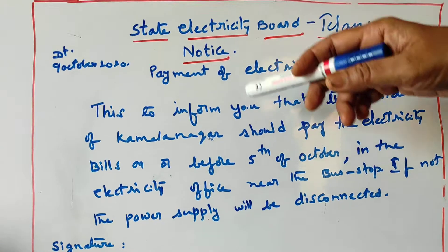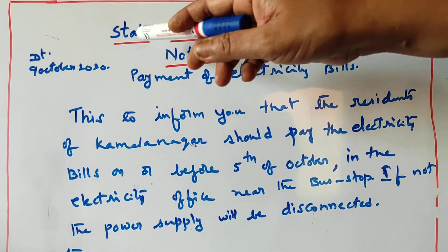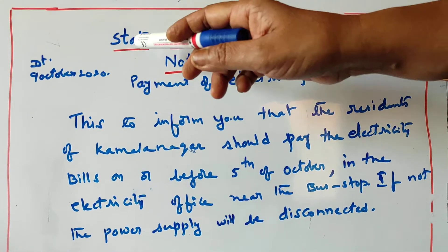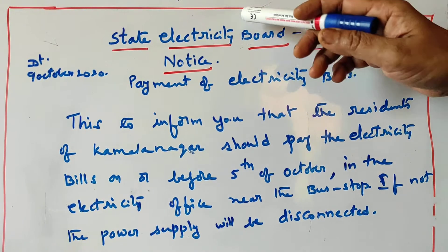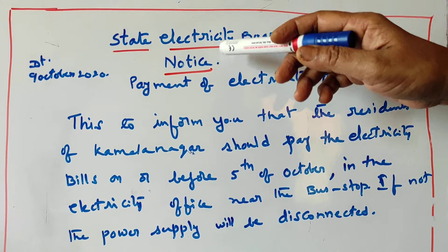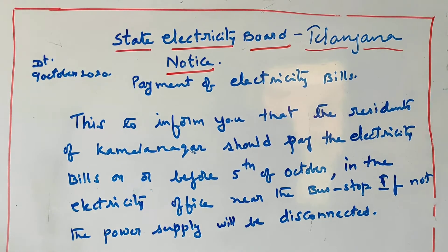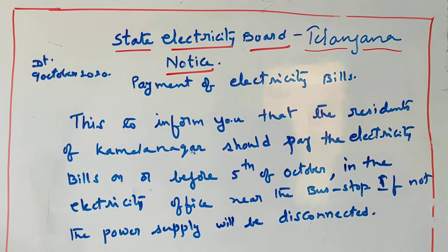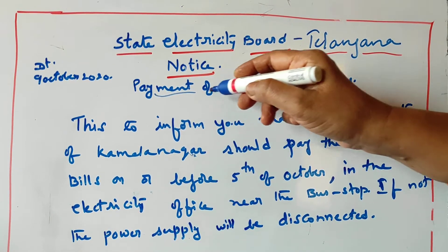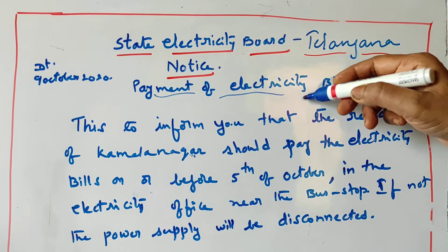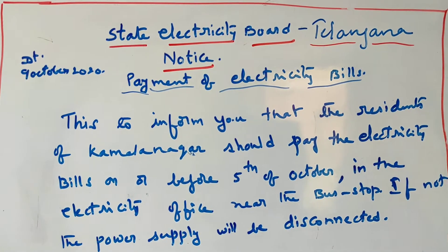So now this is the example notice. The first element is the organization name — that is State Electricity Board, Telangana. Then 'NOTICE' — this is the heading. Then what is the subject here: 'Payment of Electricity Bills.' This is the subject, and it comes under the heading of the notice.